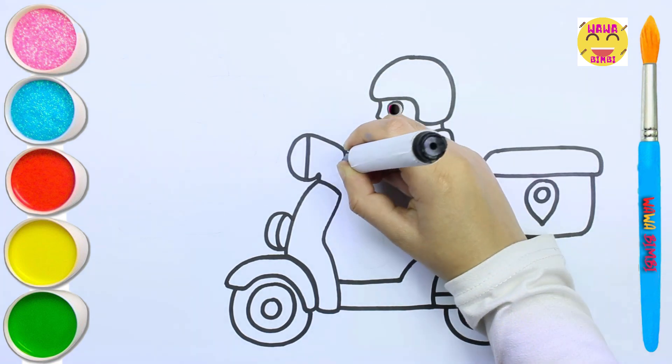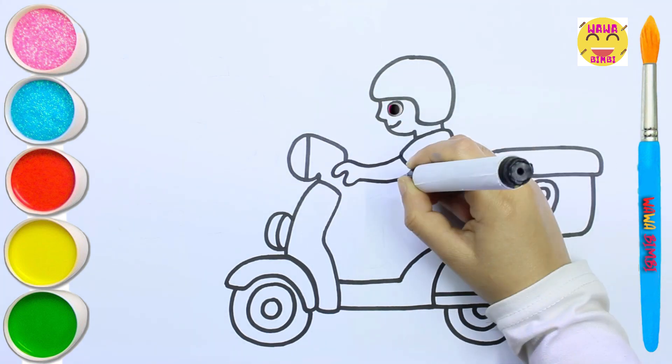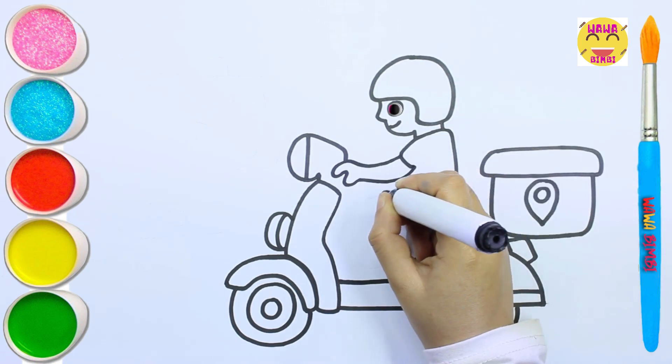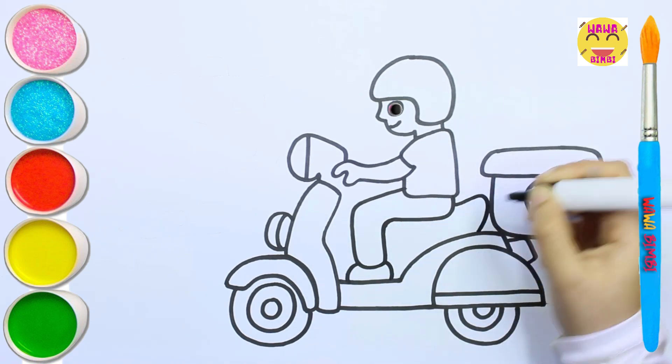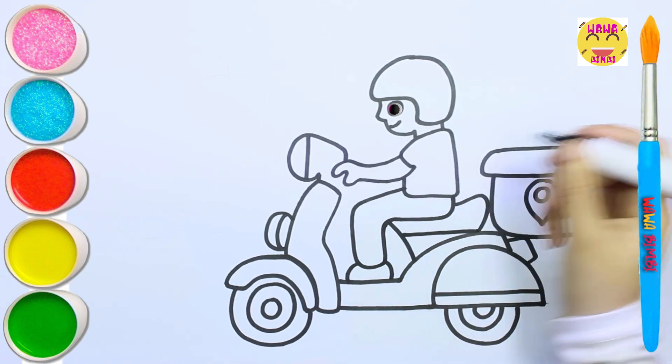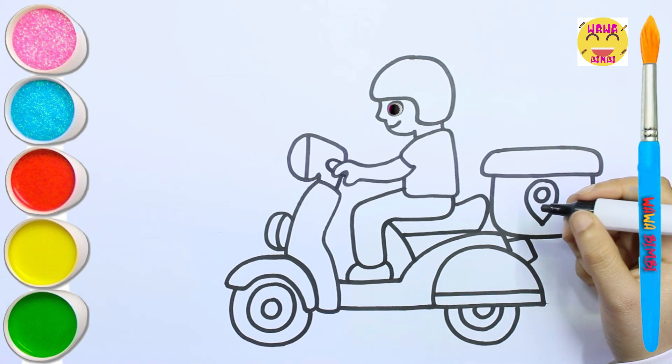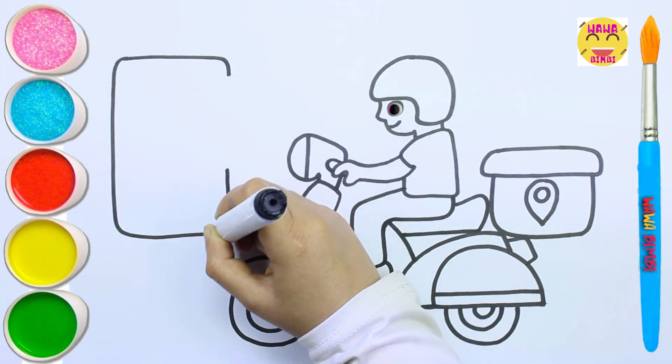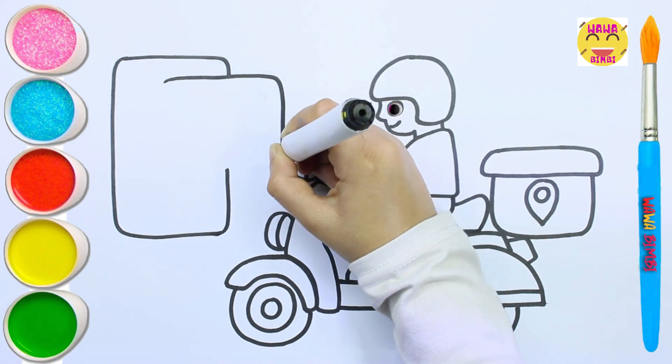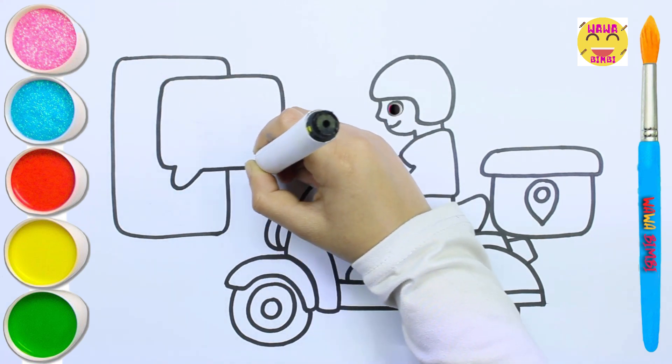Look, he's watching the drawing. Let's draw a phone here. Finally, I'm drawing a fork and a spoon.